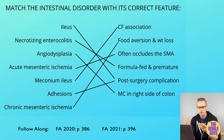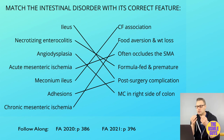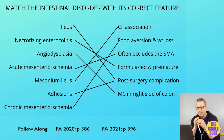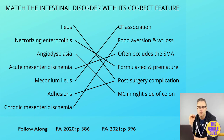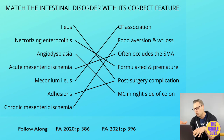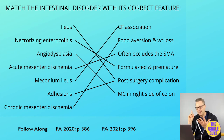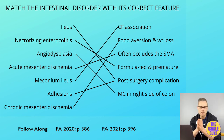Adhesions result from trauma, most commonly abdominal surgery, and are the most common cause of small bowel obstruction. On x-ray, you'll see multiple dilated small bowel loops. Angiodysplasia is characterized by tortuous dilation of vessels, most commonly on the right side of the colon, typically in older adults, and is associated with end-stage renal disease, aortic stenosis, and von Willebrand disease. A common presentation is hematochezia.